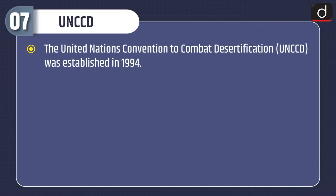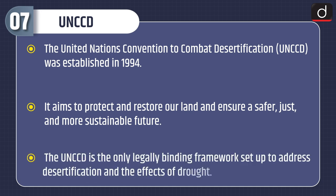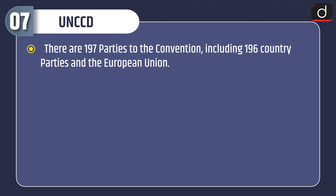Now lastly, let's discuss about UNCCT. The United Nations Convention to Combat Desertification, or UNCCT, was established in 1994. It aims to protect and restore our land and ensure a safer, just and more sustainable future. The UNCCT is the only legally binding framework set up to address desertification and the effects of drought. There are 197 parties to the convention, including 196 country parties and the European Union.